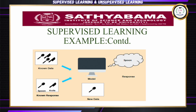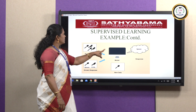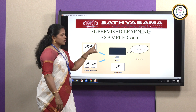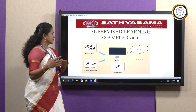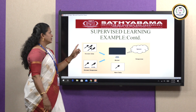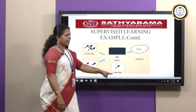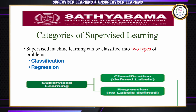Another example: here we give labeled data — knife and spoon. The model is trained with this labeled data. Once model construction is completed, we give new data and it produces the output.